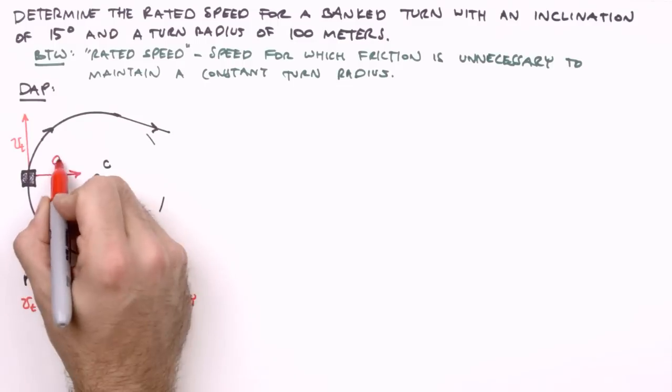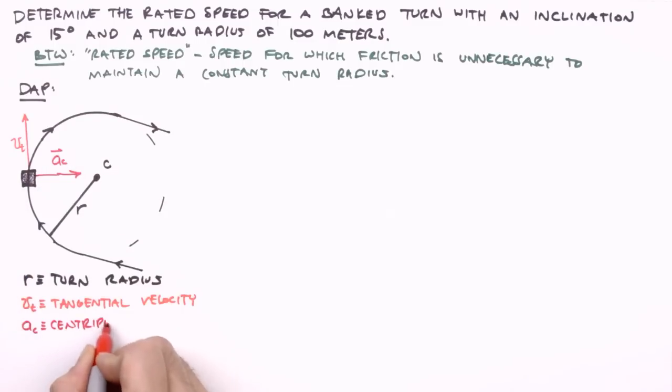Lastly, we'll indicate the direction of the centripetal acceleration of our vehicle. Oops, forgotten arrow. Now, a couple forces are acting on our vehicle, keeping it in uniform circular motion, and that means we need a free body diagram.